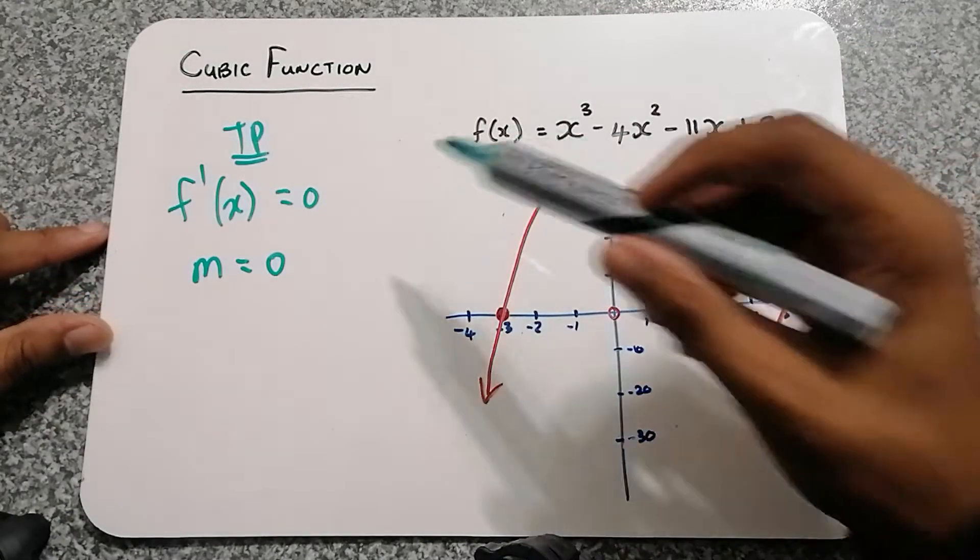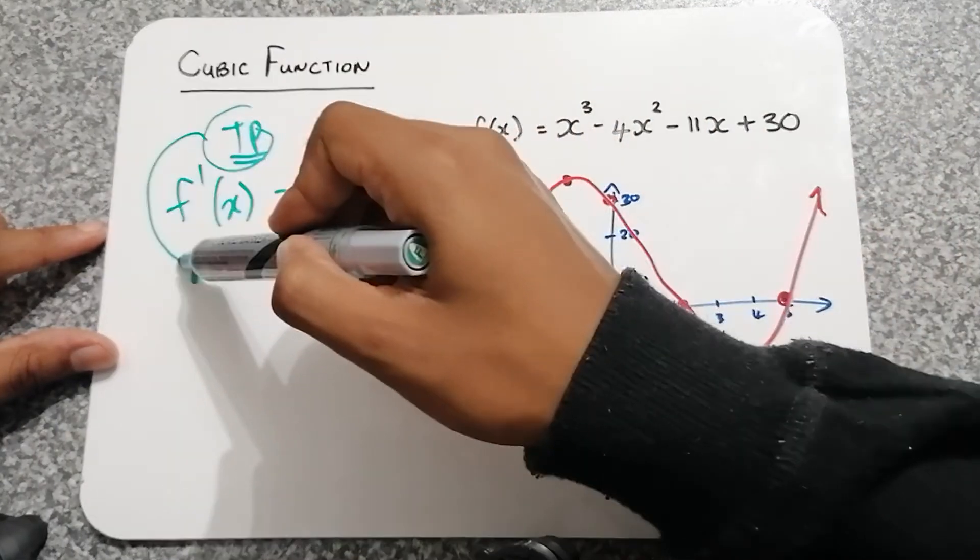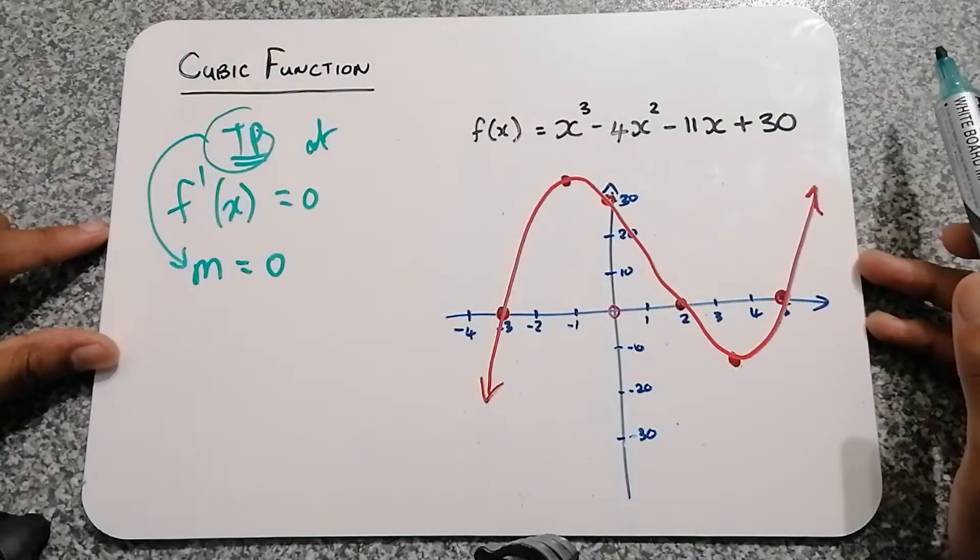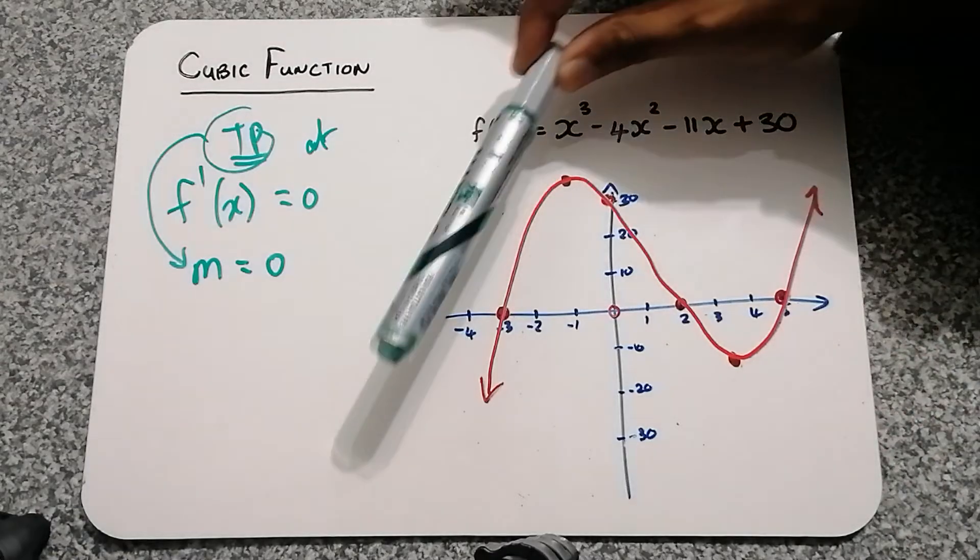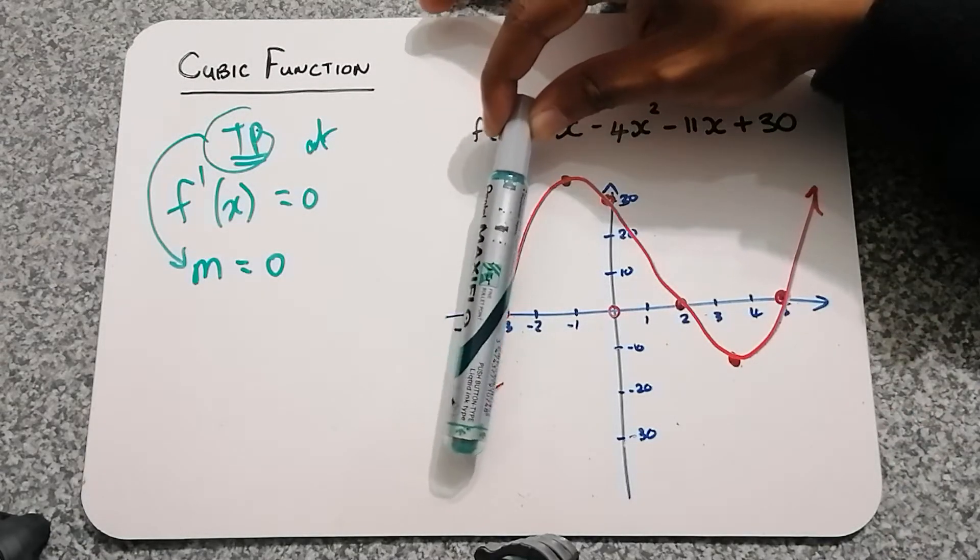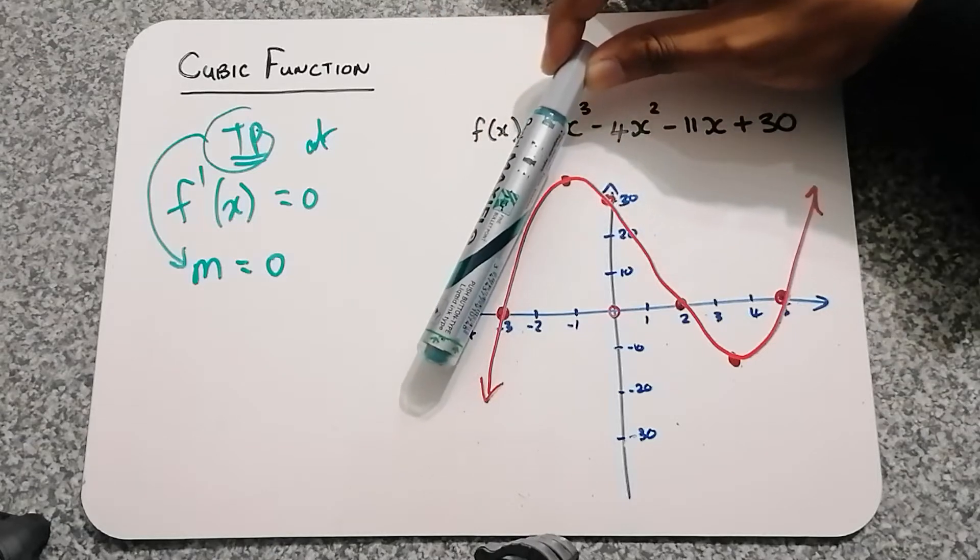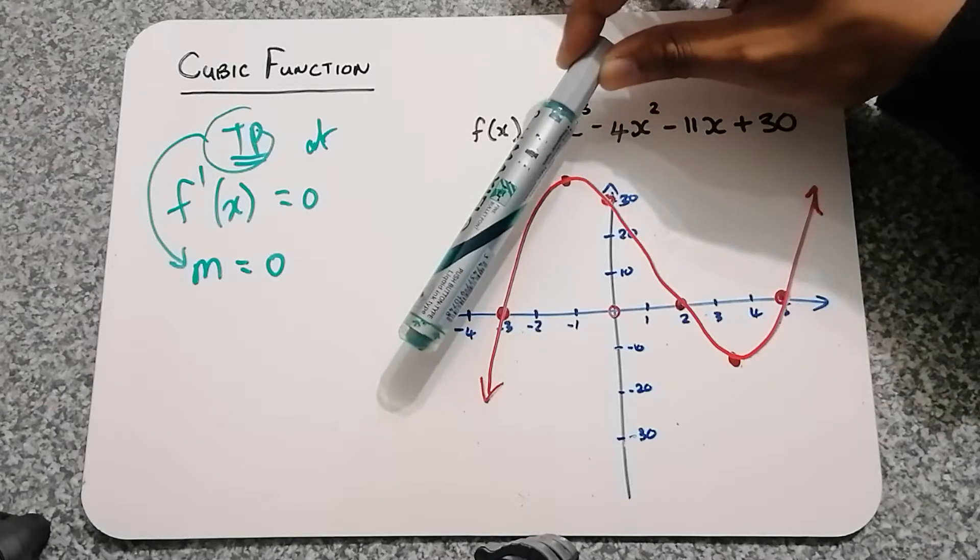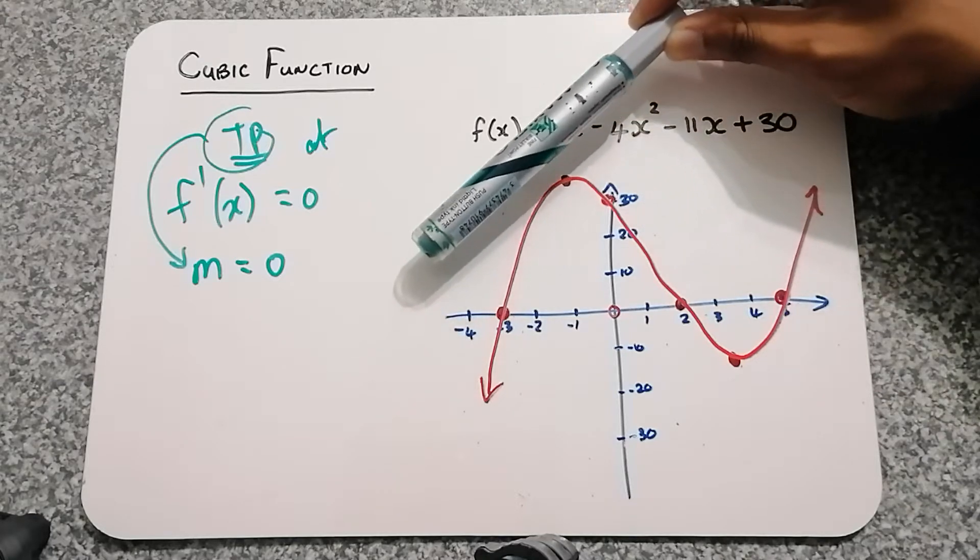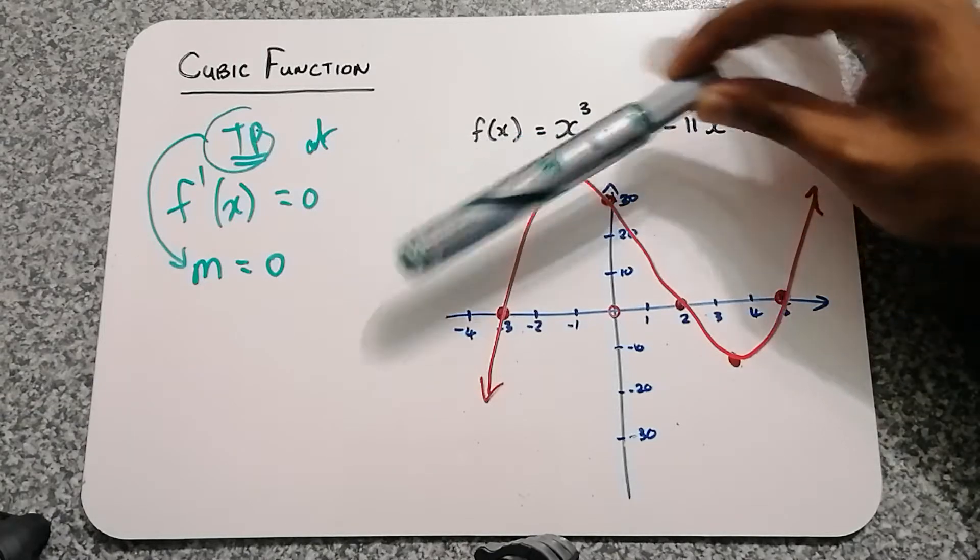A derivative of a function is simply the gradient of a function. Now basically what we are saying here is at the turning point, the gradient of the function is zero. Now let's see if that's true. This function starts out increasing. If I were to draw a tangent next to the function, you can see the tangent is facing upwards and to the right, which means it's an increasing function. And then as we go all the way to the top, all the way to the turning point, realize how this line flattens.